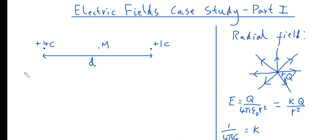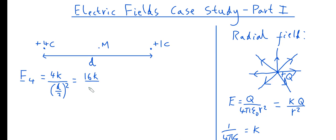The electric field due to the 4 coulomb charge at midpoint M, call it E4, is given by 4k divided by r squared. Here r is D over 2, since the midpoint is a distance D/2 from the 4 coulomb charge. This simplifies to 16k over D squared newtons per coulomb. The electric field strength is a vector quantity, so we need to specify a direction. If we place a positive charge at M, it feels repulsion from the 4 coulomb charge, so E4 points to the right.